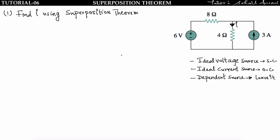Now let us solve a problem using superposition theorem. We have to find the value of current i flowing through the 4Ω resistor. According to superposition theorem, I take one independent source at a time. First note: an ideal voltage source should be replaced by a short circuit, and an ideal current source should be replaced by an open circuit. If there is a dependent source, we leave it as it is.